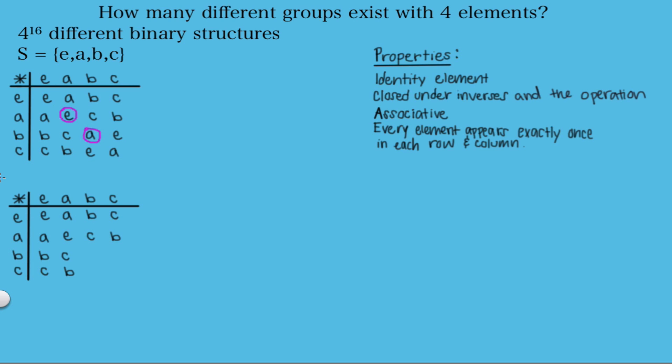So the first part we're going to keep the same, but now instead of choosing A, we're going to choose E. Then the rest of the table must be filled out this way. And this is still another valid option for a group.